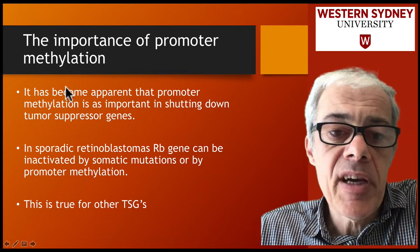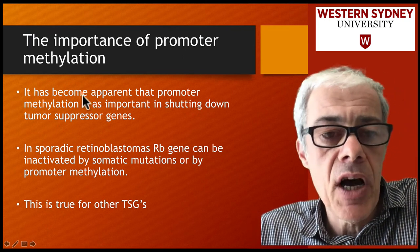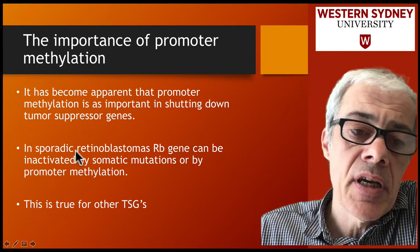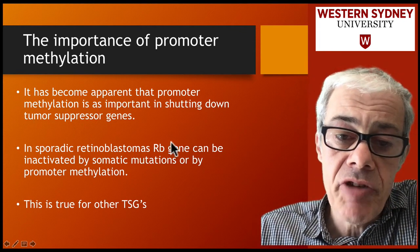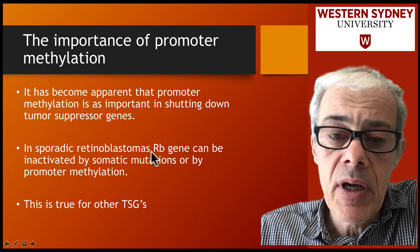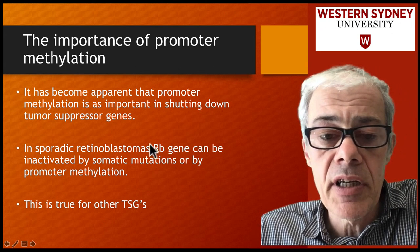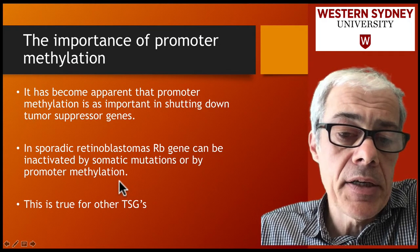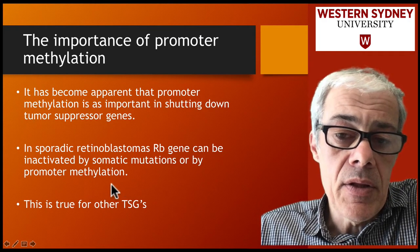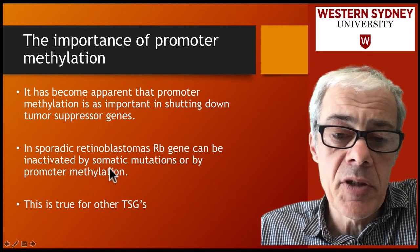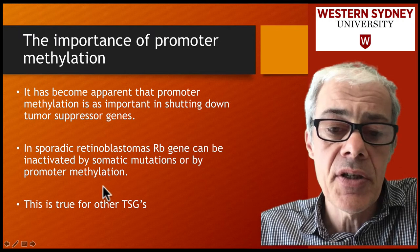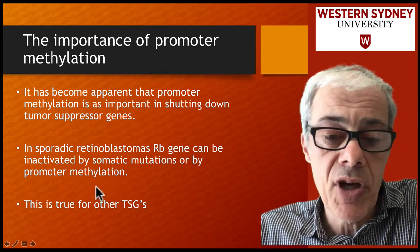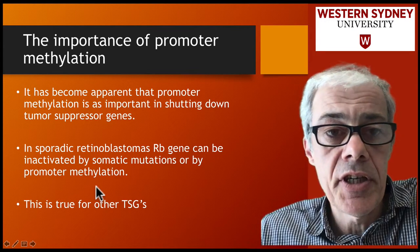It has become apparent over time that methylation is important in shutting down tumor suppressor genes, such as the retinoblastoma gene, which has many CpG islands in its promoter. In addition to somatic mutations, you can also get promoter methylation shutting down retinoblastoma and other tumor suppressor genes.